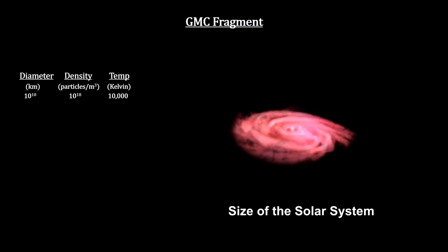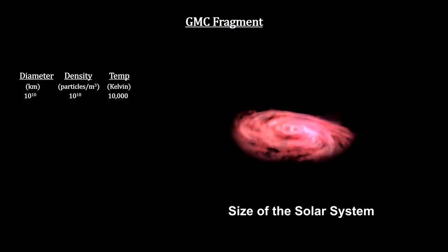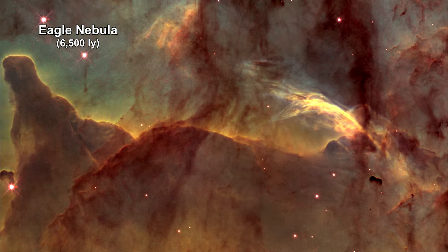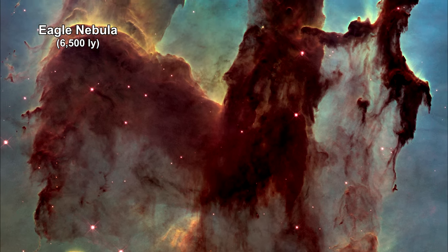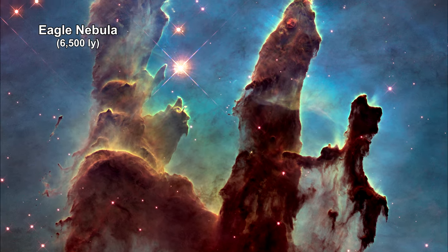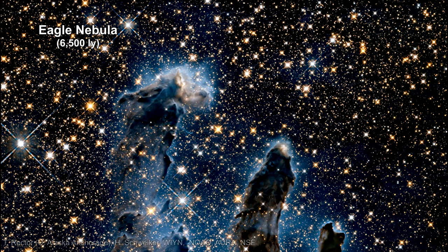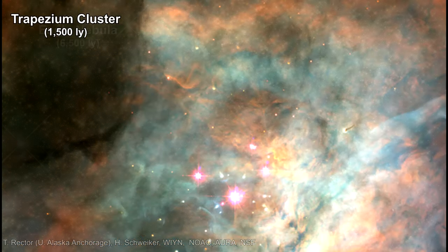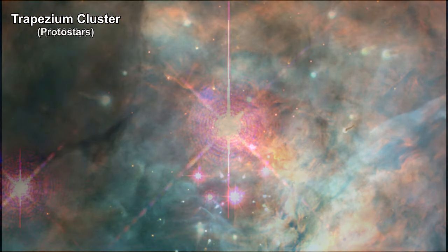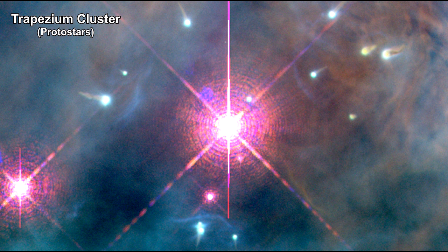Stars develop out of these fragments in three observable phases. Protostars remain shrouded in the dust and gas clouds that created them, and can only be seen by infrared telescopes. The Eagle Nebula is a good example of this — it contains large numbers of forming stars, and some of these protostars can be seen with Hubble's near-infrared image. Here we see the Trapezian cluster of four stars at the heart of the Orion Nebula, and if we zoom in, we can see several protostars around one of the larger stars.